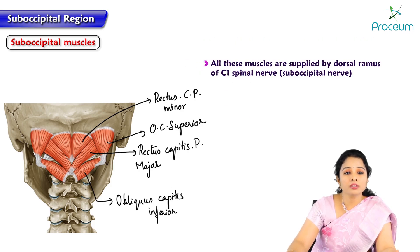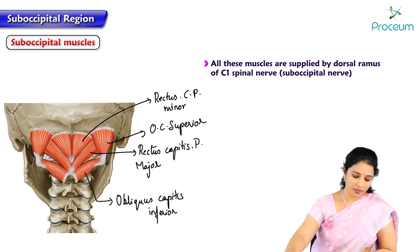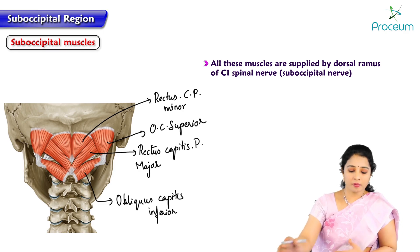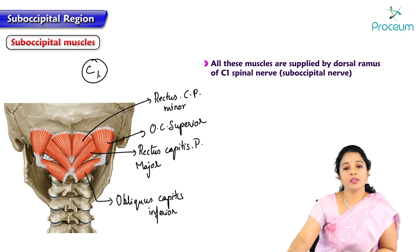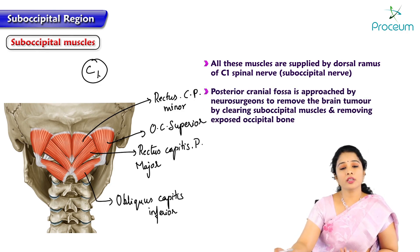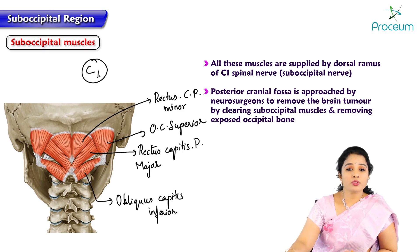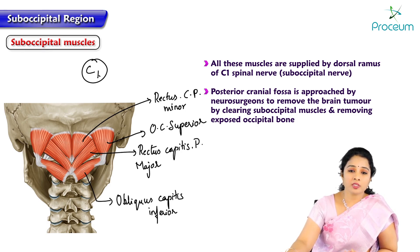All these muscles are supplied by the dorsal ramus of the C1 spinal nerve, otherwise called the suboccipital nerve. The posterior cranial fossa is approached by neurosurgeons by removing brain tumors through clearing the suboccipital muscles and removing the exposed occipital bone.